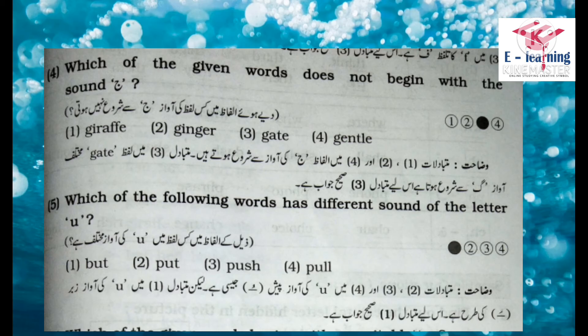Question number 4/5: Which of the given words does not begin with the sound G? دیے گئے الفاظ میں کس لفظ کی ابتدا 'j' کی آواز سے نہیں ہوتی؟ Options: Giraffe, Ginger, Gate, Gentle. Explanation: متبادلات ایک، دو اور چار میں الفاظ 'j' کی آواز سے شروع ہوتے ہیں۔ متبادل تین میں لفظ 'gate' کی آواز 'go' سے شروع ہوتی ہے، اس لیے متبادل تین صحیح جواب ہے۔